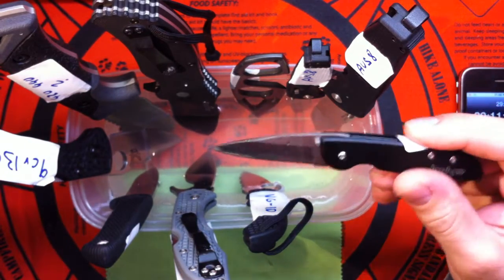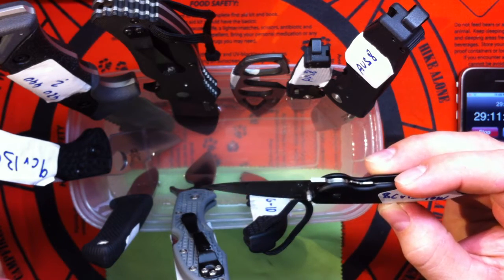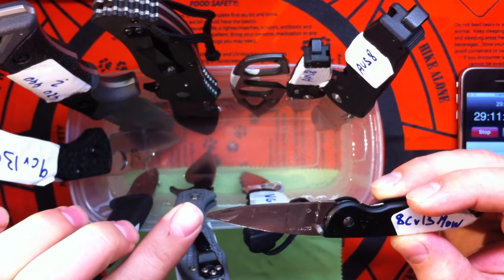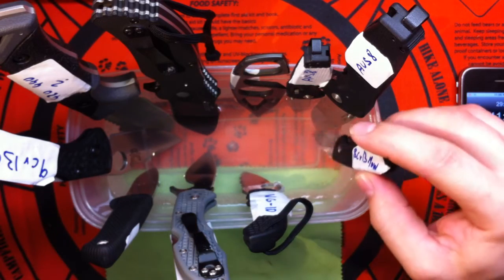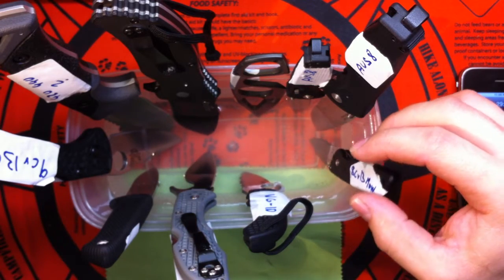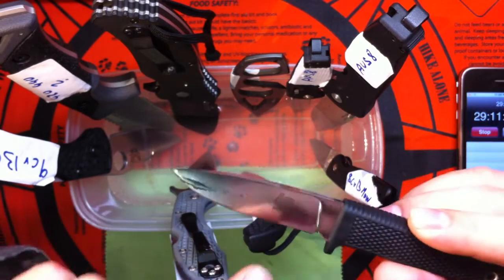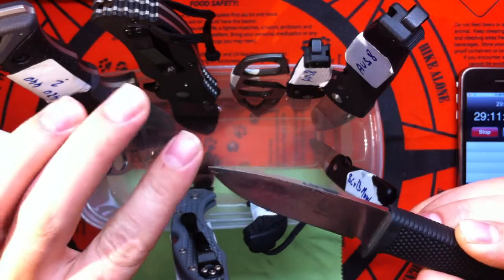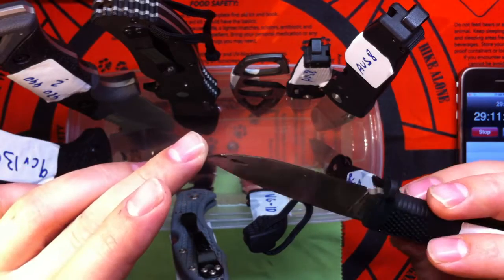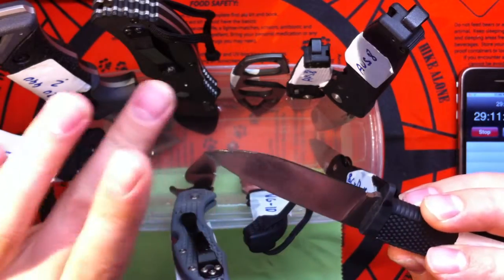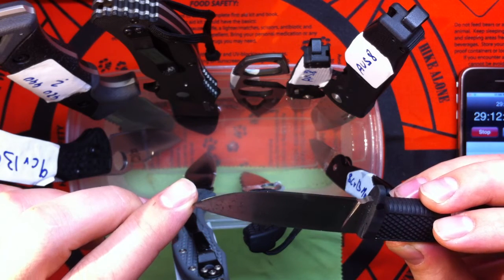This Kershaw Leek 8cr13mov looks good - same steel as the Tenacious. Another interesting thing: yesterday when I checked the Pendleton, it had a little rust spot on the edge.